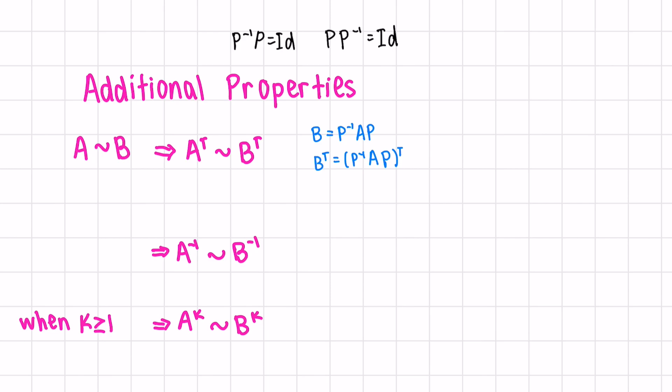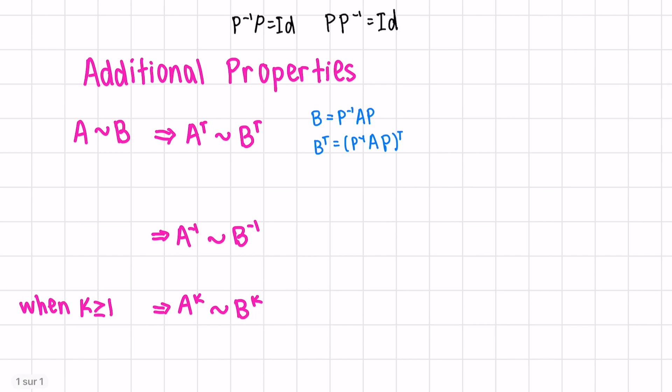Similar to taking the inverse of multiple matrices, when we have the transposition of multiple matrices, the order switches. We can also switch the order of the transpose and the inverse operation. And now we can say our invertible matrix Q is equal to P transpose inverse. This would mean that B transpose equals Q inverse AT Q, which is exactly what we wanted.